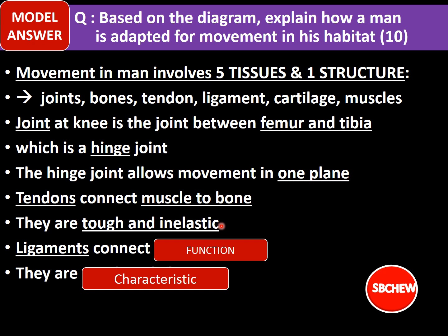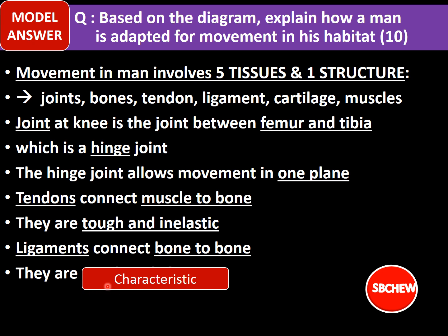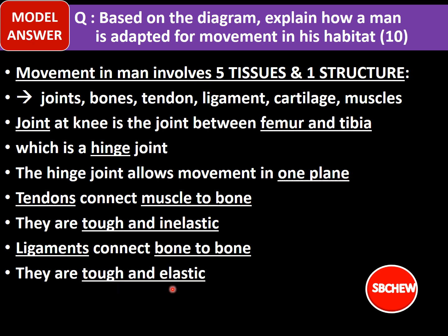Ligaments connect bone to bone and are very different from tendons — they are tough and elastic. You can elaborate that ligaments hold the bones together and prevent dislocation of bones at the joint.